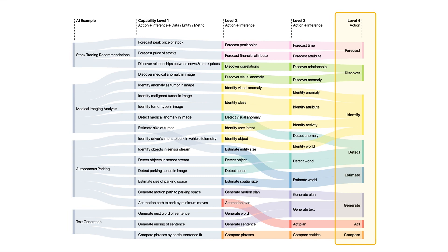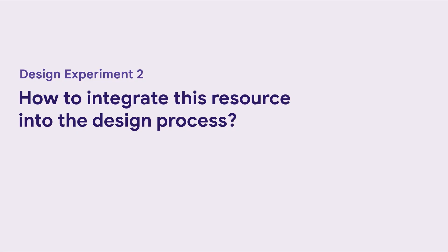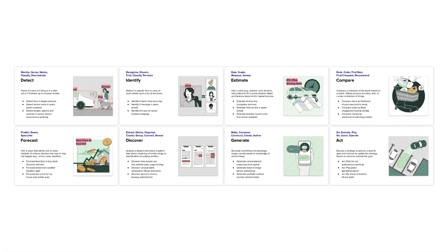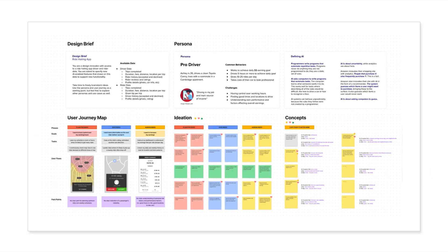Once we had this collection of examples and the breakdown of individual capabilities, the question became how do we integrate these into the design process — when and how this resource might be useful. We started by sketching some communicative forms. We created a table listing all the capabilities, their synonyms, definitions, and examples where they typically show up. We also created a set of slides that provide an overview of each capability.